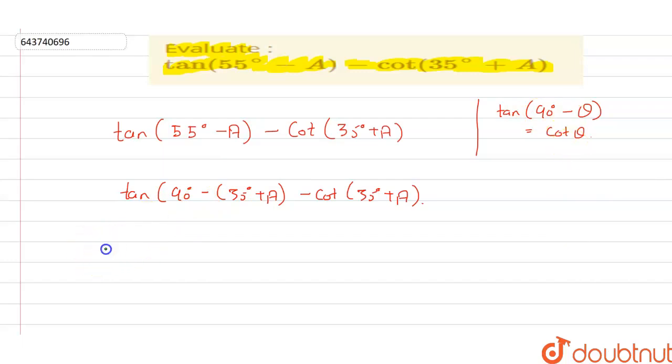can write this equation as: this is equal to tan(90 - (35° + A)). This whole term will behave as theta, so which is equal to cot of 35° plus A minus again cot(35° + A). So now see